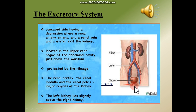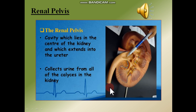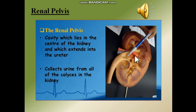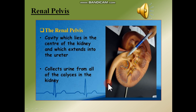The renal pelvis is clearly visible in the model of the kidney. It is a cavity which lies in the center of the kidney and extends into the ureter. The function of the renal pelvis is to collect urine from all the calyces in the kidney — both the major and minor calyces. This cavity then forwards the urine toward the ureter.